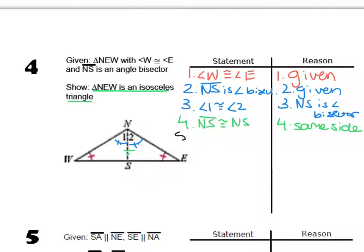Then I would say that the two smaller triangles are congruent. So triangle NSW is congruent to triangle NSE, and I used side angle angle there.